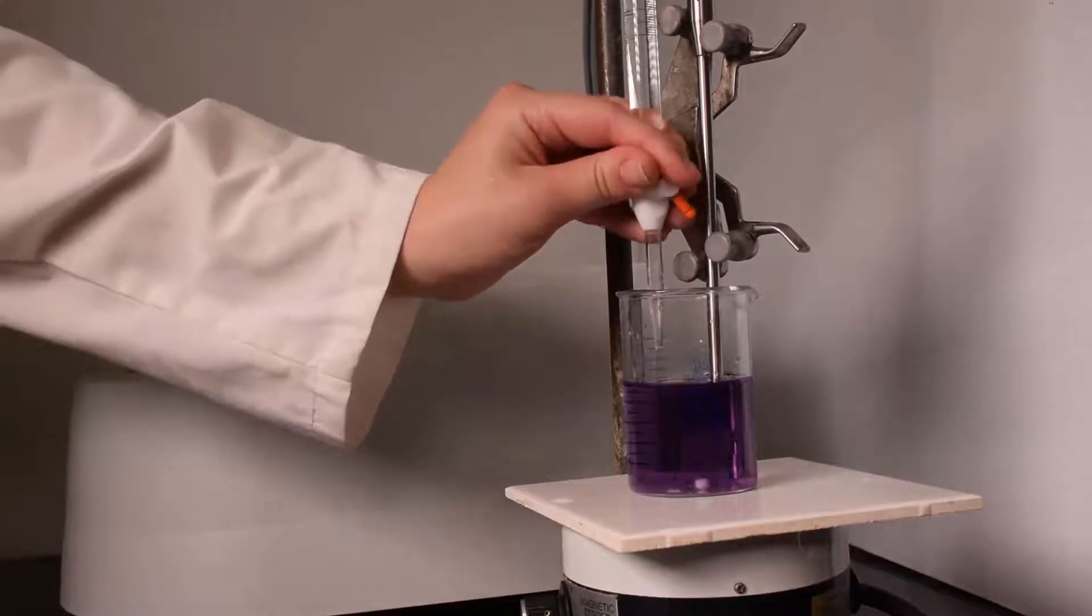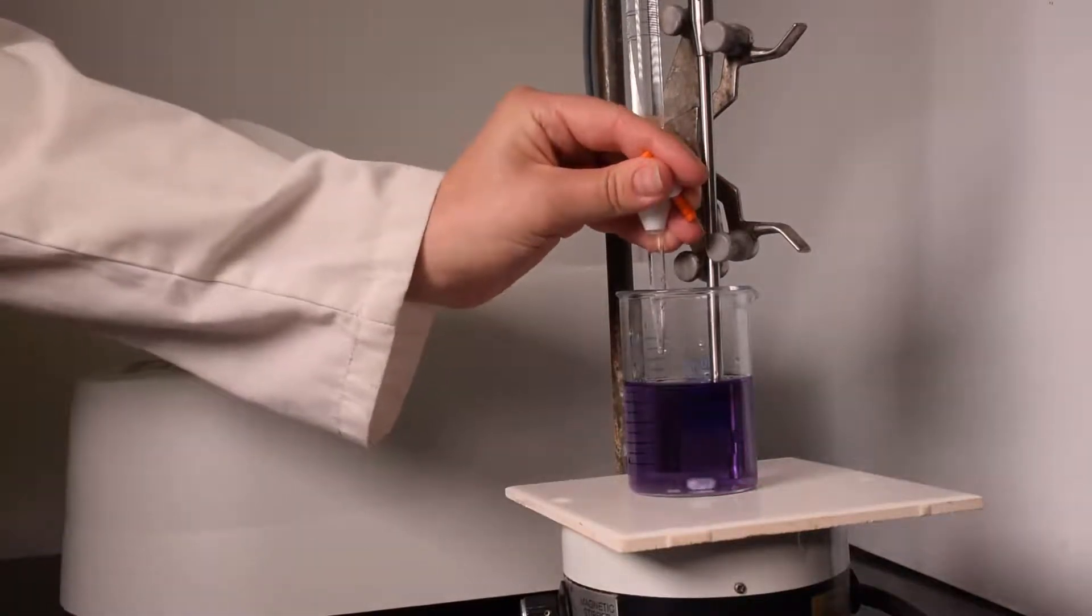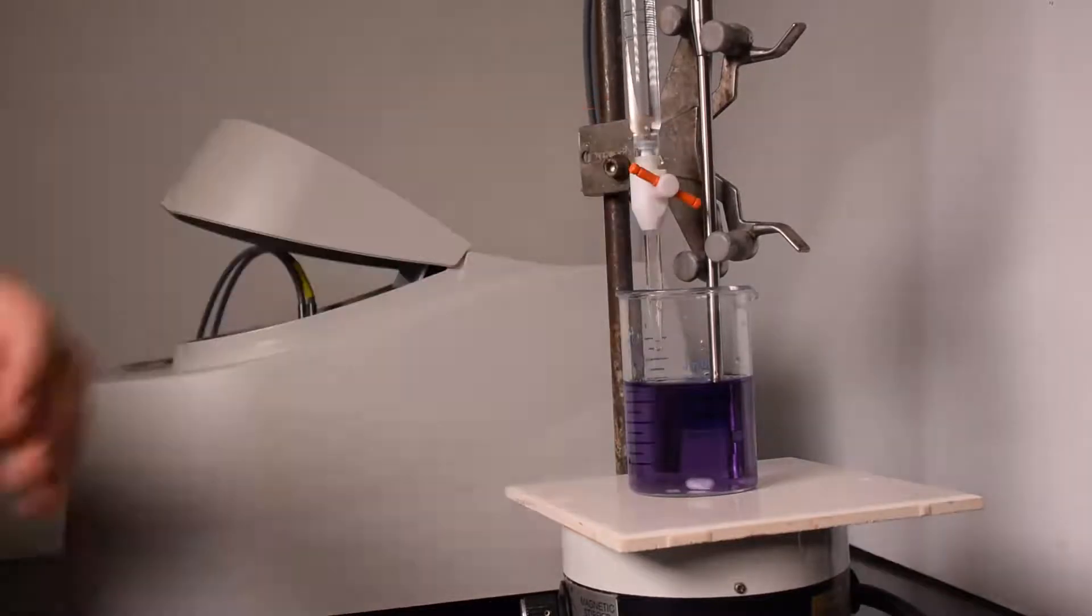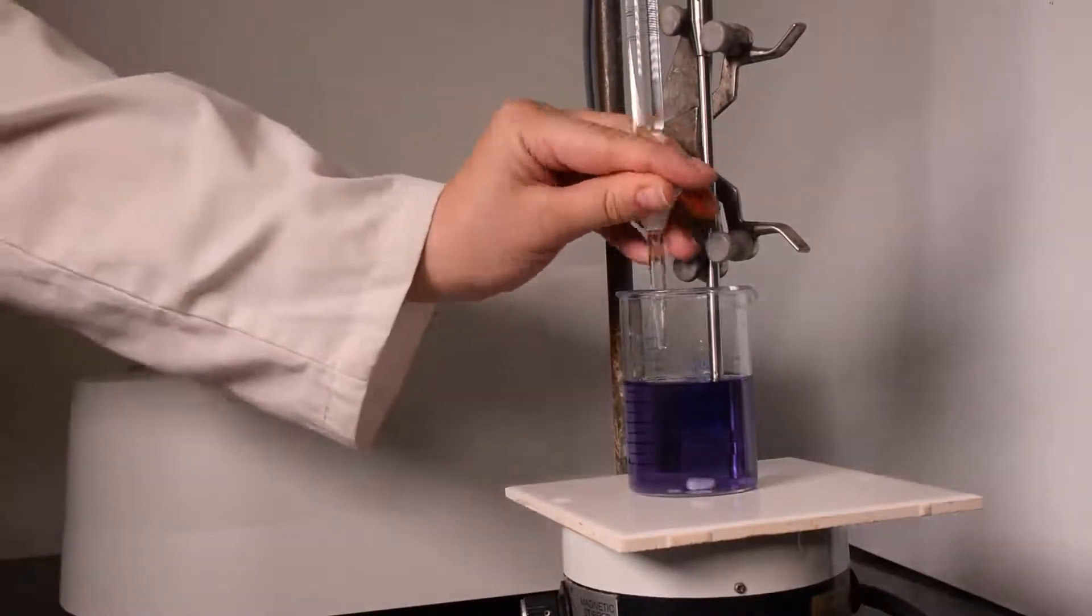At this point, slowly add titrant and take several readings so that you will have several data points before the endpoint. Remember to record in your data book both the absorbance and burette volume for each reading.